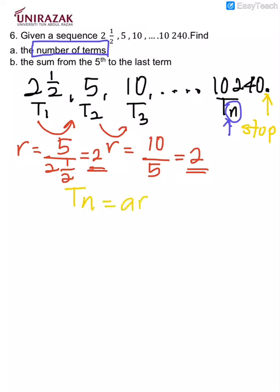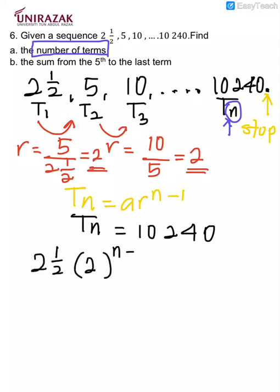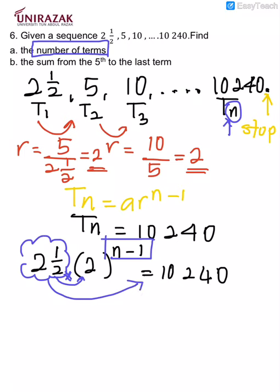When I substitute according to the formula, I know the term n is this, but the problem is I don't know what is the n. In order for me to determine, I substitute the a, the r equal to 10,240. Mathematically you cannot multiply, you cannot open the bracket as per normal because there is a power here. So what should I do with this number? I will move it to the right side, leaving on my left 2 to the power of n-1.